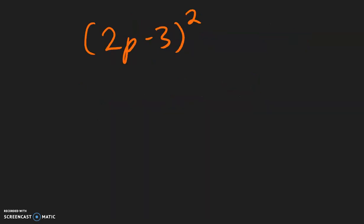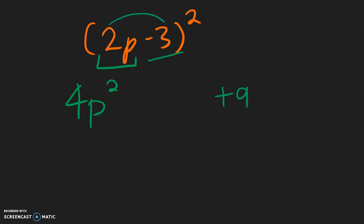For this example, multiply the front by itself: 2p multiplied with 2p is 4p squared. Multiply the back by itself: negative 3 multiplied with negative 3 is positive 9. Then multiply the two terms with one another: 2 times negative 3 is negative 6p. And then we double it: negative 6 times 2 is negative 12p.